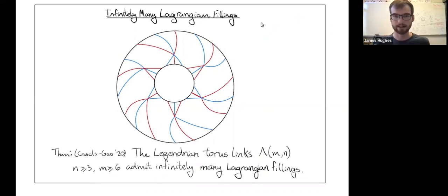If I keep doing that, what Casals and Gao showed is that this gives us infinitely many distinct fillings of torus links MN, where M is greater than 6 and N is greater than or equal to 3.